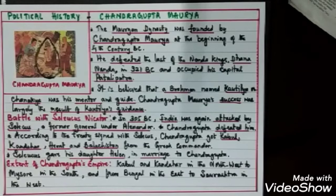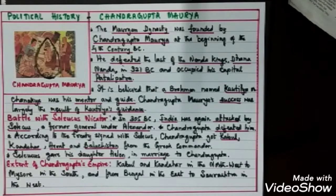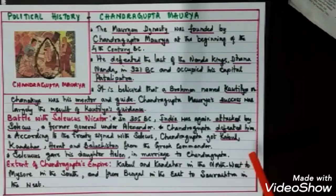Seleucus Nicator was the former general of Alexander the Great. Chandragupta had occupied important places belonging to the Greeks, so Seleucus wanted to reclaim those regions and waged a battle. In this battle, Chandragupta was victorious. Rather than continuing enmity, Seleucus sought a friendly alliance, and both signed a treaty.